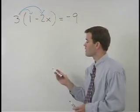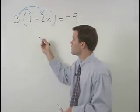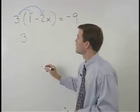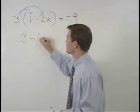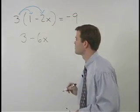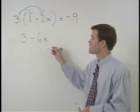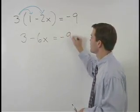When we do that, we get 3 times 1, which is 3, and 3 times negative 2x, which is negative 6x. So we have 3 minus 6x equals negative 9.